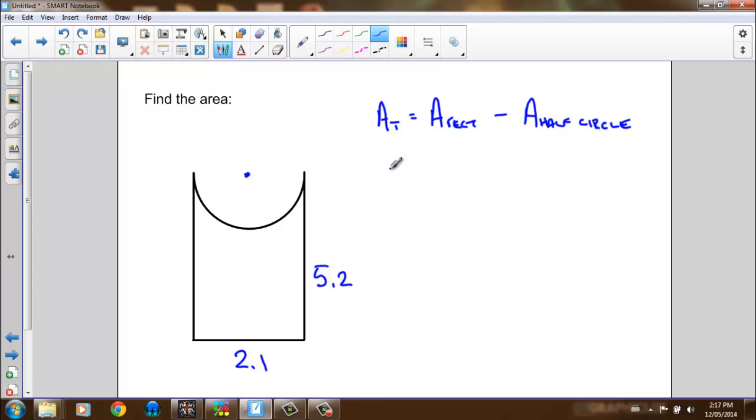If you look on your formula sheet, the area of a circle is equal to pi times the radius squared. In this question, the radius will be 2.1 units divided by 2, or 1.05 units.